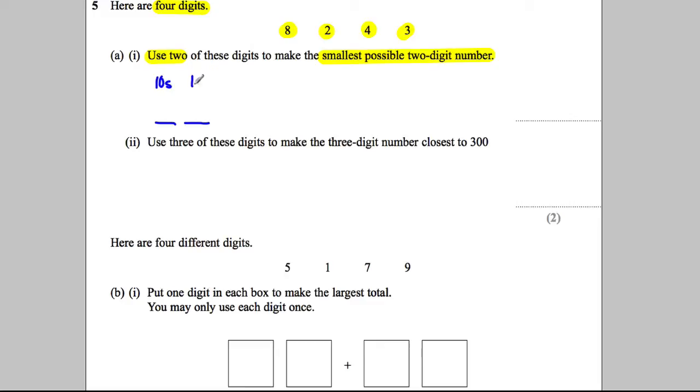This column's the tens, this column's the ones. So we want the smallest ten we can possibly make, obviously, to make this as small as possible. And that would be using the 2.